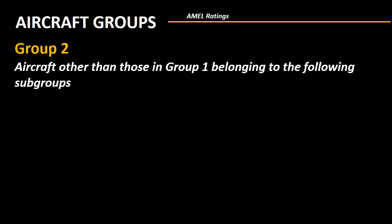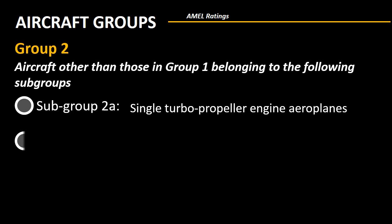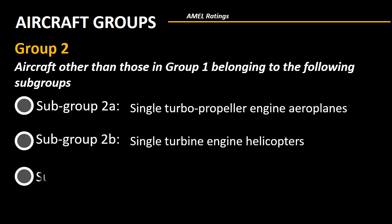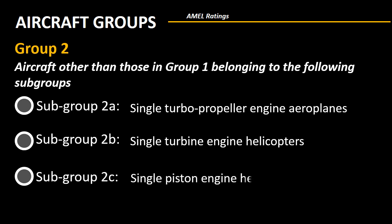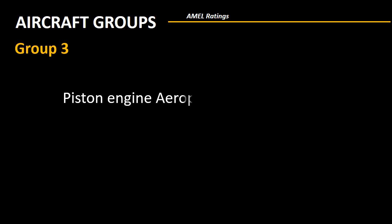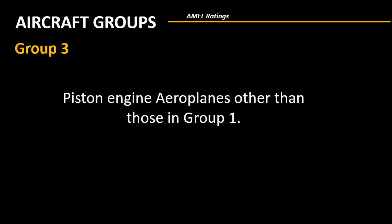Group 2 includes aircraft other than those in Group 1, belonging to the following subgroups: Subgroup 2A includes single turbopropeller engine aeroplanes. Subgroup 2B includes single turbine engine helicopters. Subgroup 2C includes single piston engine helicopters. Group 3 includes all piston engine aeroplanes other than those in Group 1.